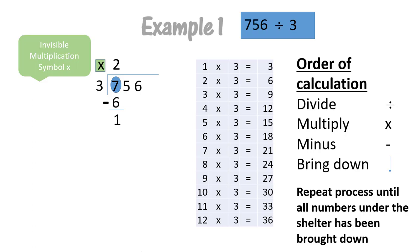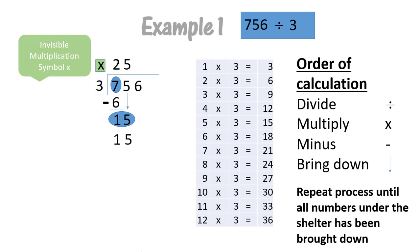Then we have a look under our shelter to see if there are any more numbers that we can bring down. We can bring down our number five, so now we have 15. Fifteen is bigger than three. We say how many times can three go into fifteen? Three can go into fifteen five times. And we multiply again: five times three equals fifteen. And we subtract — fifteen minus fifteen will give us zero.